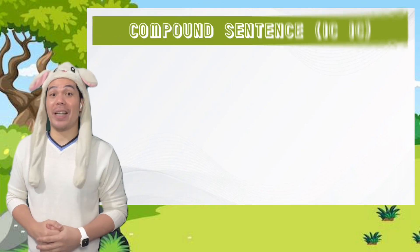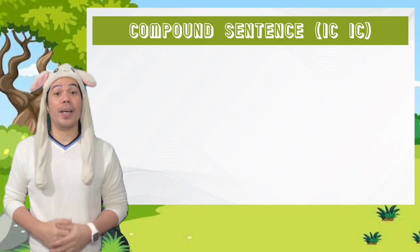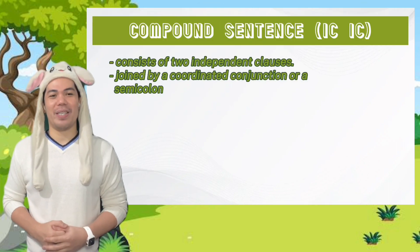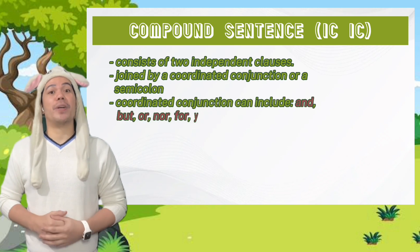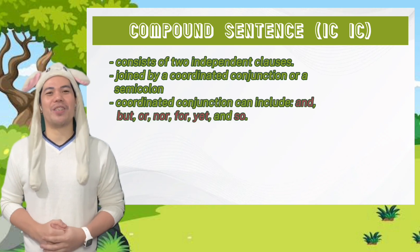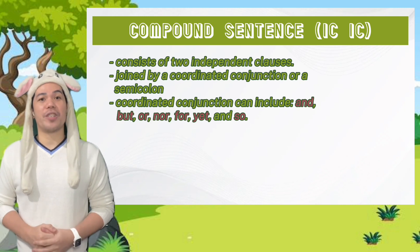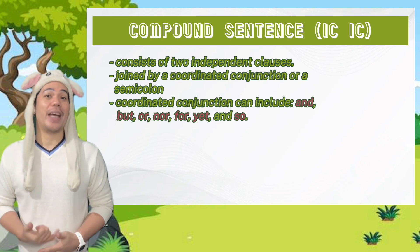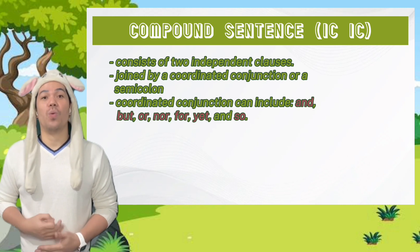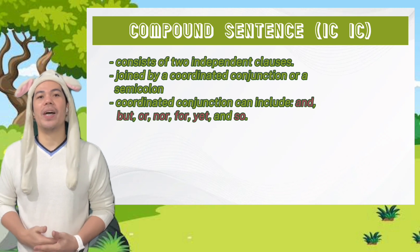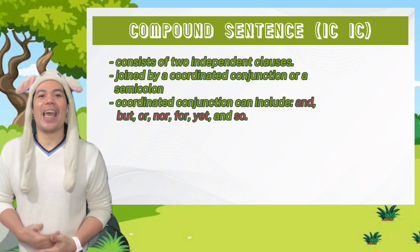The next type of sentence structure is the compound sentence. It consists of two independent clauses joined by a coordinating conjunction or a semicolon. Coordinating conjunctions include: and, but, or, nor, for, yet, and so.